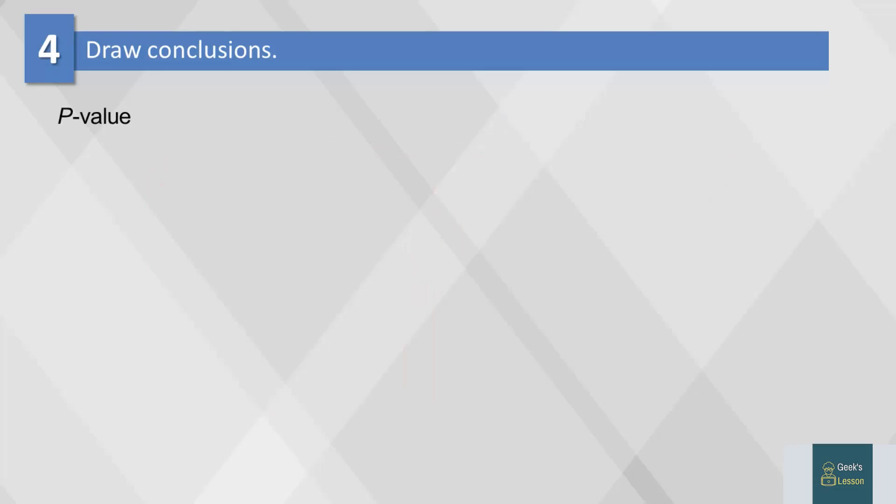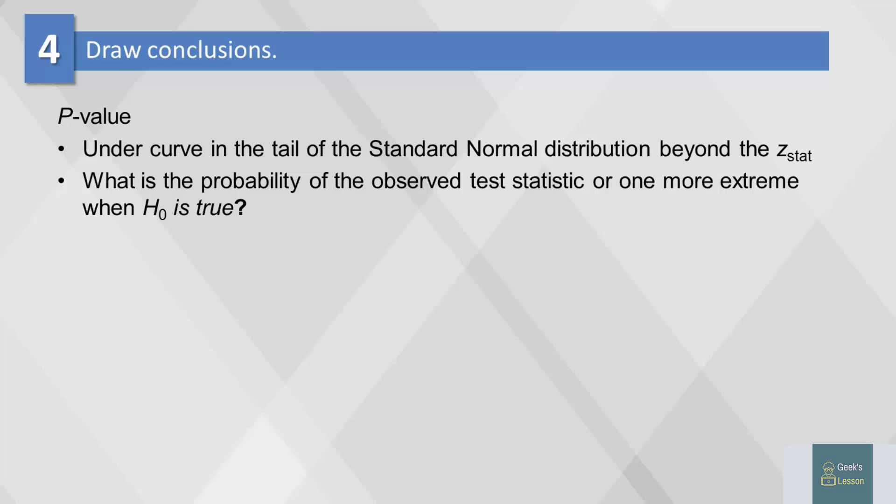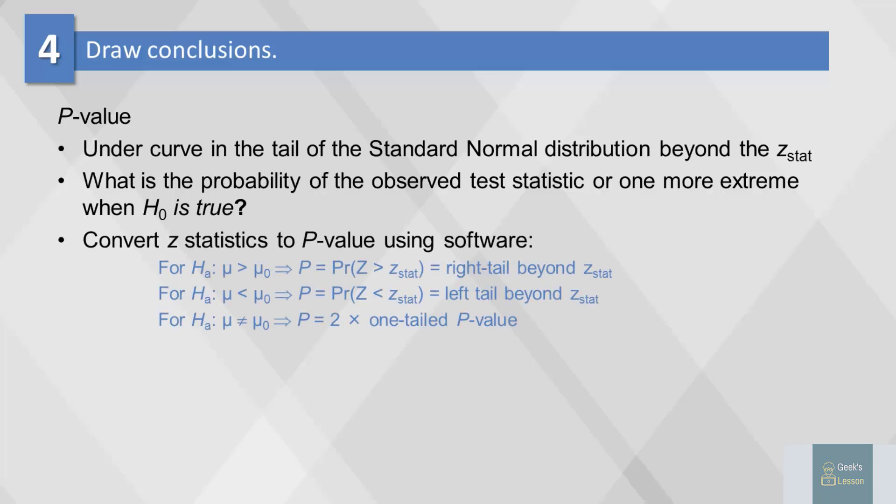The p-value is the area under the normal curve in the tails beyond the z-stat. It answers the question, what is the probability of the observed test statistic or one more extreme when H0 is true? To convert z-statistics to p-value, we will use software.